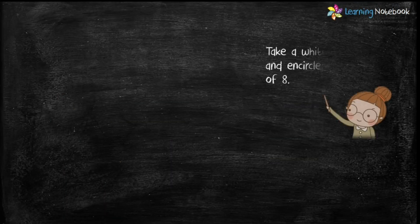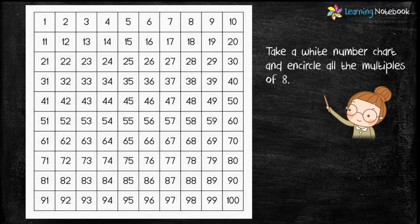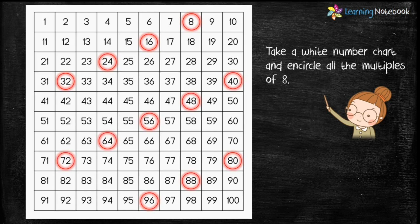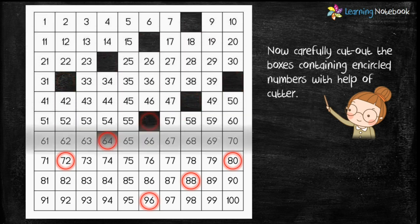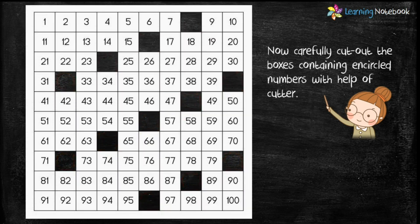In a similar manner, take another white colored number chart and encircle all the multiples of 8 up to 100, like 8, 16, 24, 32, and so on. Now carefully cut out the boxes containing the encircled numbers with the help of a cutter. So when you have cut out all the multiples of 8, the sheet looks like this.